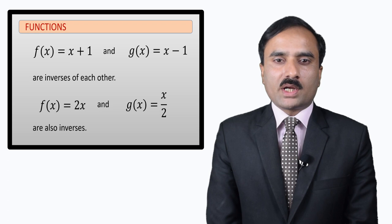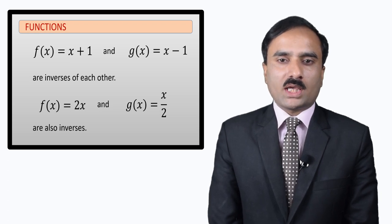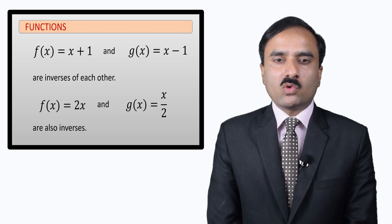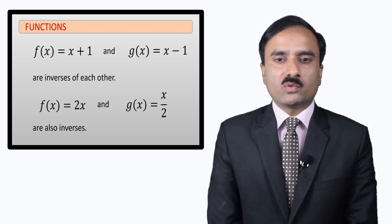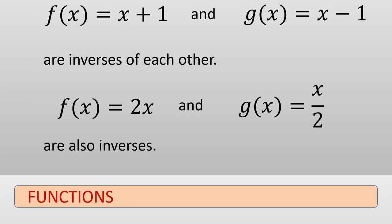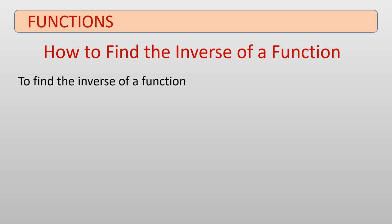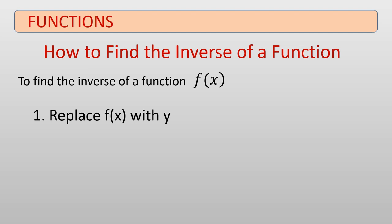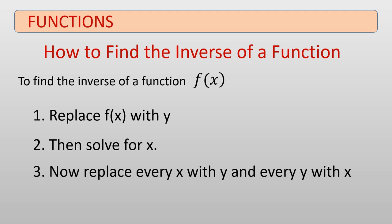It isn't always possible to write the inverse of a function just by looking at it; rather we follow a step-by-step procedure. To find the inverse of f of x: Step 1 — replace f of x with y. Step 2 — solve the equation for x. Step 3 — replace x with y and y with x. Step 4 — replace y with f inverse of x to get the inverse.